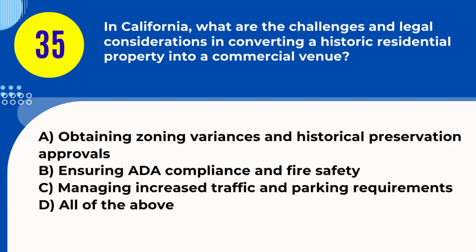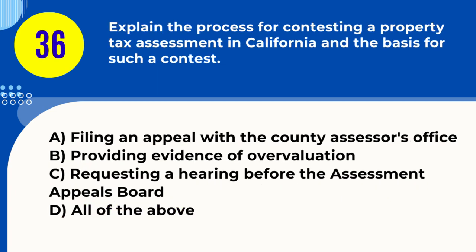Question 35. In California, what are the challenges and legal considerations in converting a historic residential property into a commercial venue? A. Obtaining zoning variances and historical preservation approvals B. Ensuring ADA compliance and fire safety C. Managing increased traffic and parking requirements D. All of the above. Answer: D. All of the above. Explanation: Converting a historic residential property to a commercial venue involves zoning, preservation, ADA compliance, and traffic considerations.